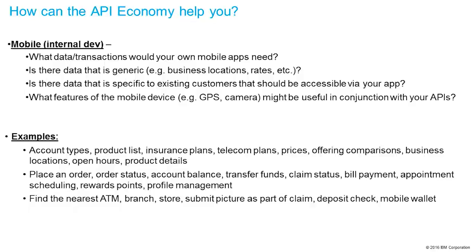So let's get into some examples, and we're going to start simple. When we think about mobile internal development, examples here are the account types that a bank might offer, the product list that a retailer might have, or what kind of insurance or telecommunications plans are available. Often on your website you have prices — a good way to think about this is what are you doing on your website today? Those are the kind of things you'll want to do on your mobile app. Those are examples of basic generic information.